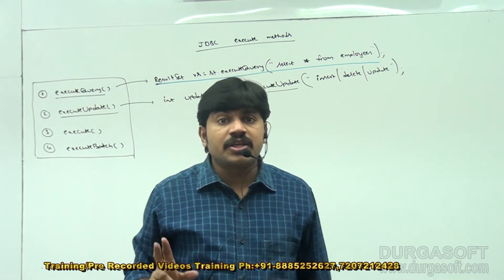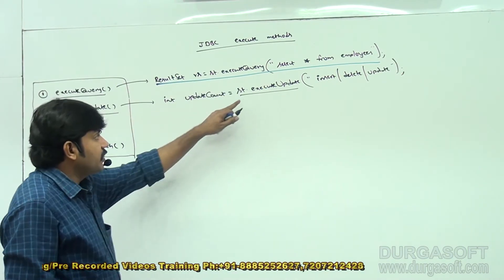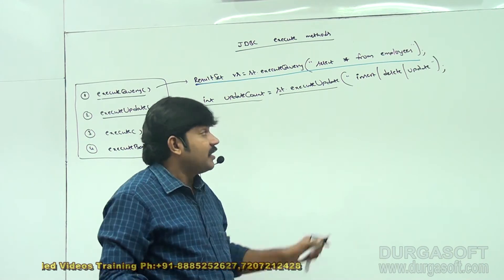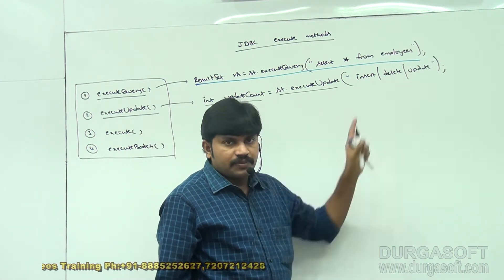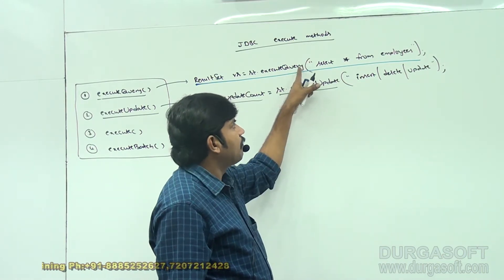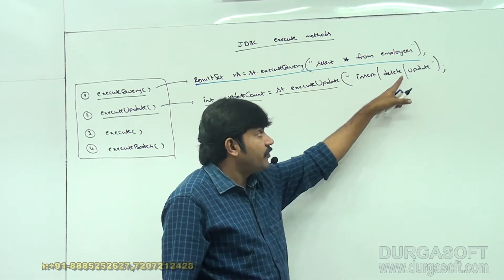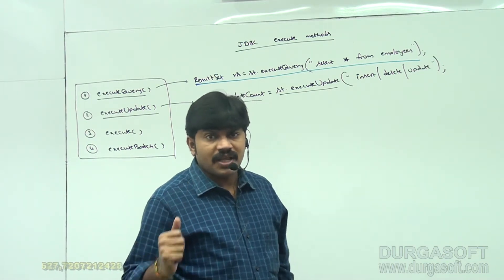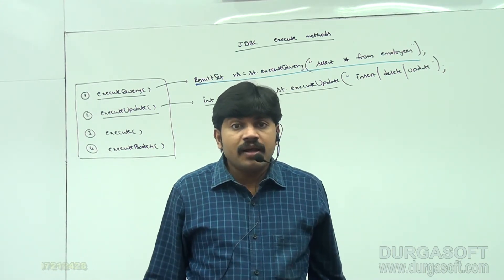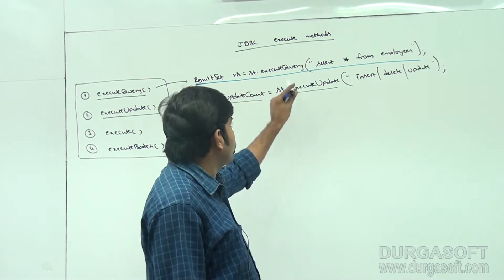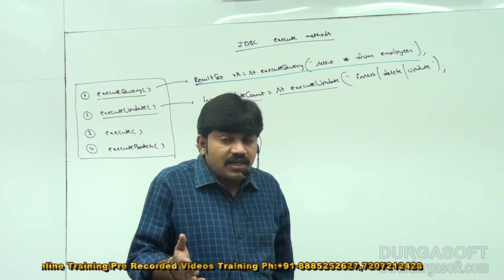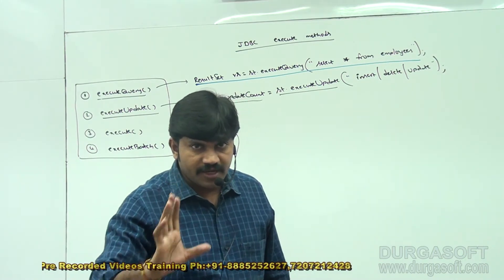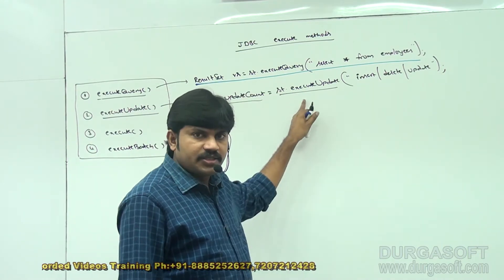The most commonly used methods are executeQuery and executeUpdate. The return type of executeUpdate is int, which represents the number of rows affected — number of rows created, deleted, or updated. The syntax is: int updateCount = st.executeUpdate(query). If you know the type of query — always SELECT, use executeQuery; always non-select, use executeUpdate.